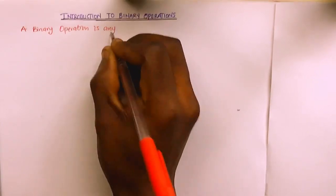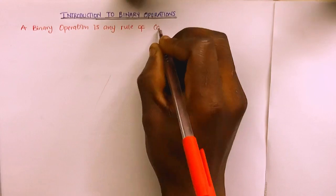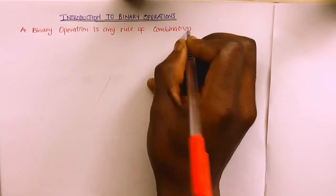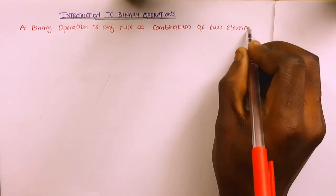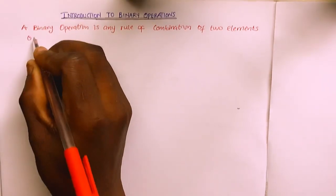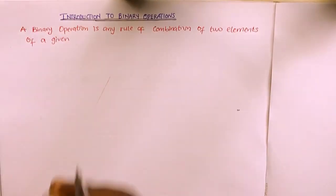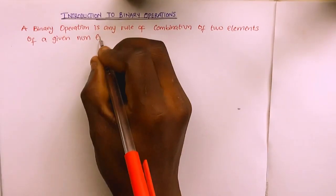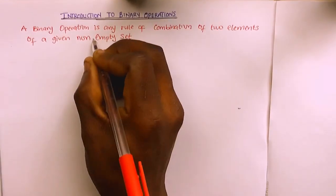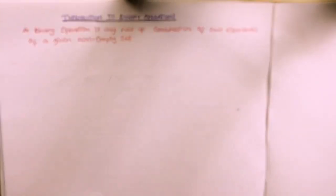A binary operation is any rules of combination of two elements of a given non-empty set. Note that an empty set doesn't count, so we specify a non-empty set. A binary operation is any rules of combination of two elements of a given non-empty set — I think this is the best definition.